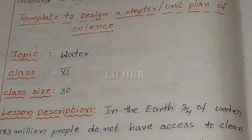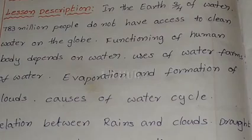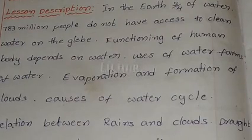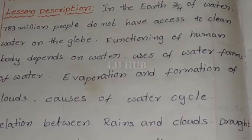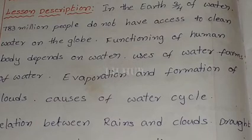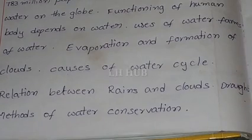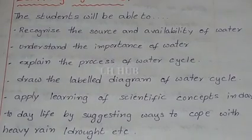Template to design a chapter or unit plan of science: Topic — Water, Class 6, class size 30. Lesson description: three-fourths of the Earth is water, yet 783 million people do not have access to clean water. The function of the human body depends on water. The lesson covers uses of water, forms of water, evaporation and formation of clouds, causes of the water cycle, relationship between rain and clouds, droughts, and methods of water conservation.